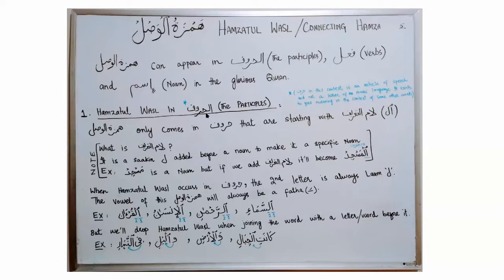Hamzat al-Wassl can come in khuroof that start with Laam al-Ta'arif. Laam al-Ta'arif is a saakin Laam added before a noun to make the noun specific. For example, Masjid is a noun; if I say Al-Masjid, this Laam is Laam al-Ta'arif. The letter before Laam al-Ta'arif is always Hamzat al-Wassl, because this Laam is saakin and we cannot start from a saakin letter. So the letter before Laam al-Ta'arif is Hamzat al-Wassl, and we say Al-Masjid — the noun has become specific.